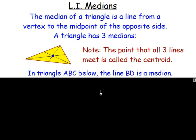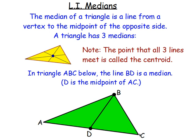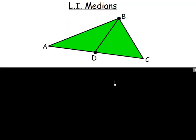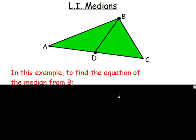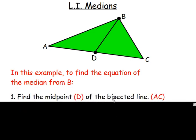Let's say you've got triangle ABC and we draw in a median from B across to D. Because it's a median, D is the midpoint of AC, so AD is the same length as DC. To find the equation of the median from B, you first need to work out the midpoint of the opposite side, which we did in the last lesson.